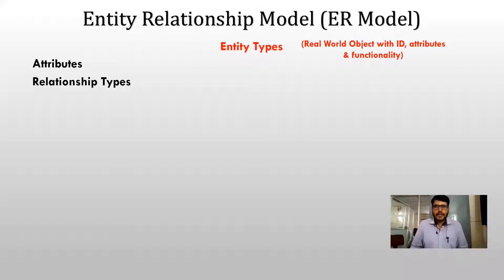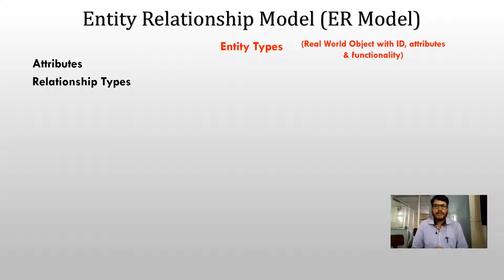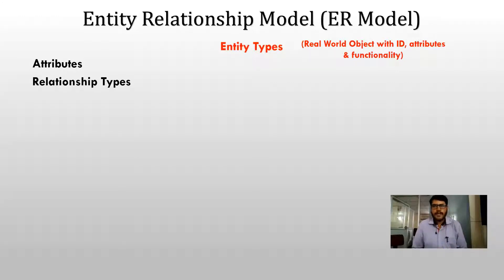Entity Types are also called as Real World Objects, which have their own identity. They must have their own attributes and their own functionalities. For example, whatever objects we are able to see in the real world — student, product, customer, employee, department, project — these are all nothing but objects.